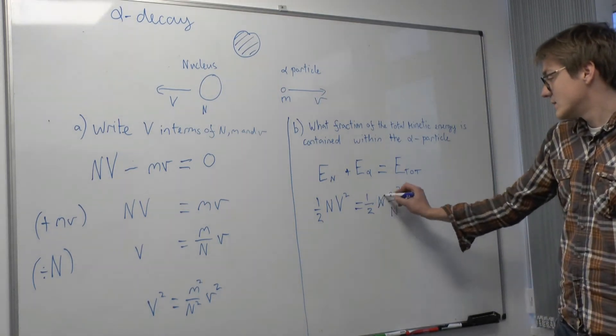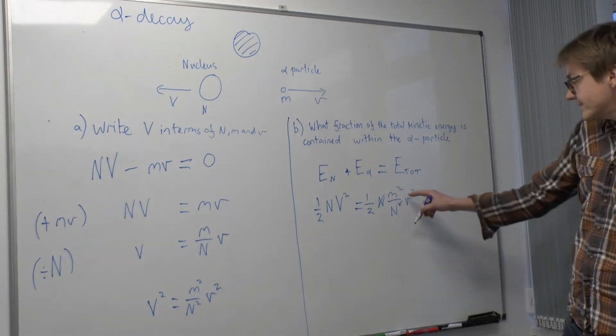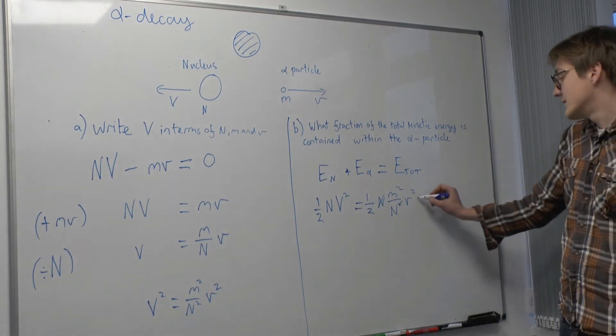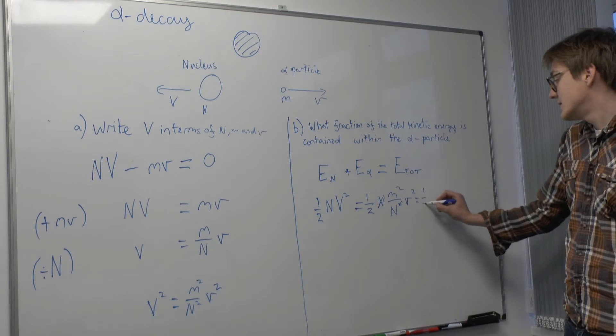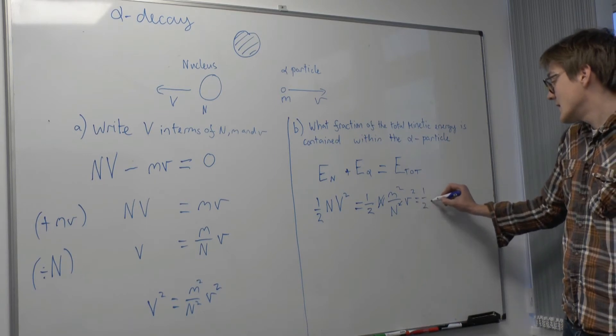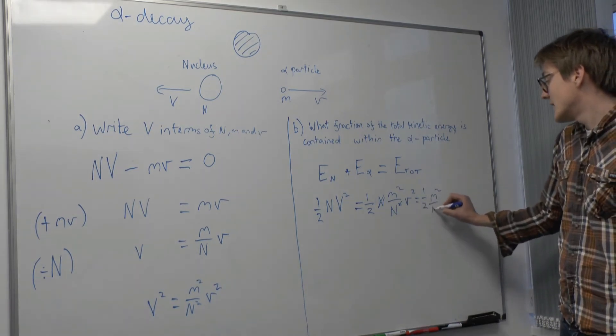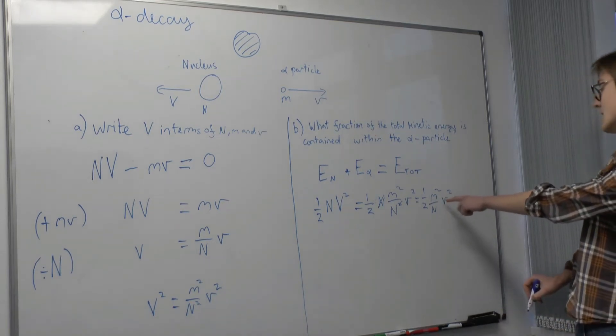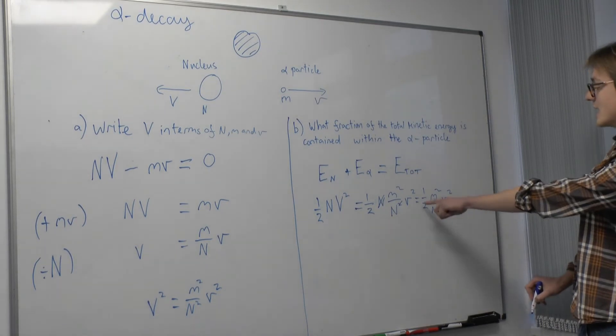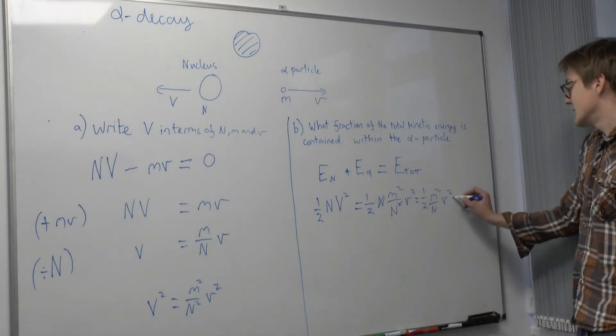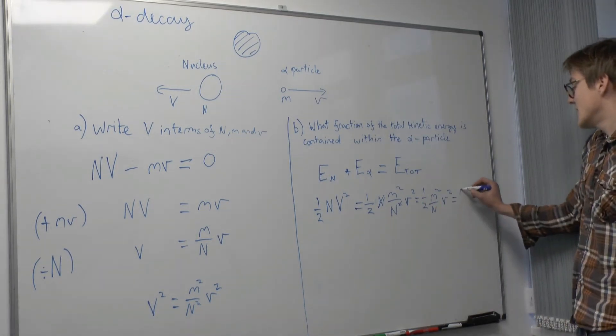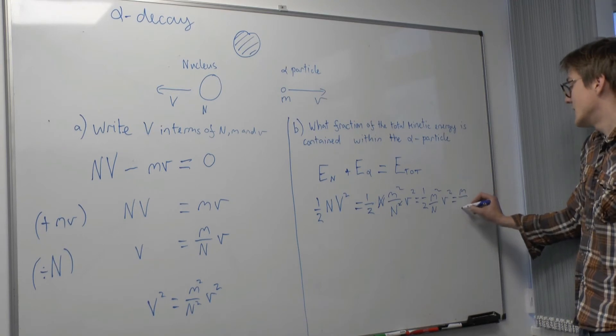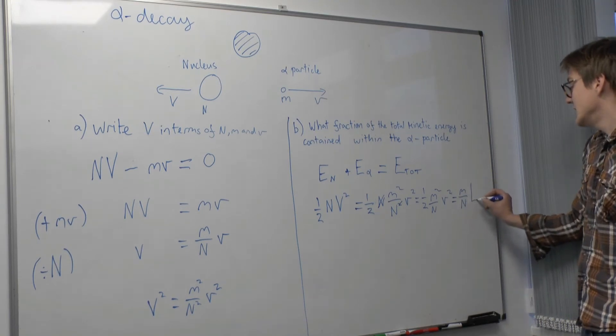So this is equal to a half N times M squared over big N squared times V squared. Cancel one of the N's. And then we have equals a half M squared over big N, V squared. And you can spot that if we pull an M over N after this, then this can be written as M over N times E alpha.